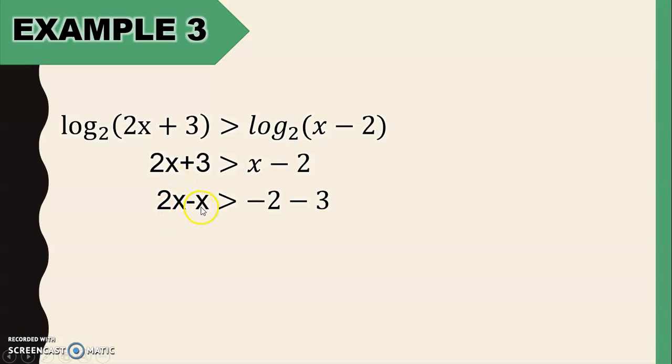Let's transpose x on the other side. So it becomes 2x minus x, then 3 on the other side. So we have negative 2 minus 3. Then let's evaluate. 2x minus x is x. x greater than negative 2 minus 3, negative 5. So x is greater than negative 5.